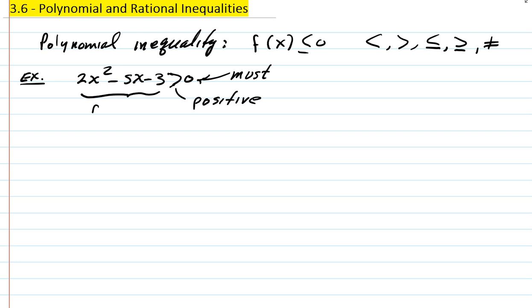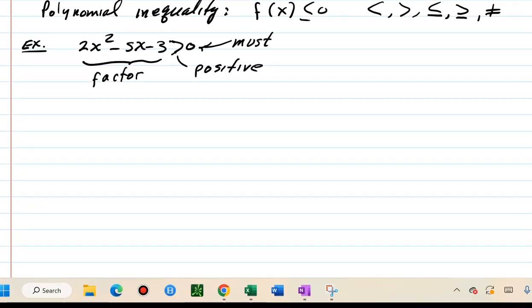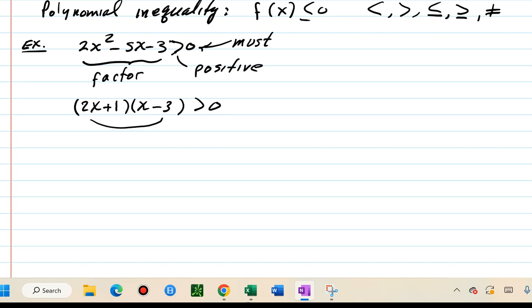The other important thing is that on the left side we have to have the factored form of the polynomial. That means we have to recall our factoring skills. The typical factoring for quadratic expressions is setting it up as a product of two binomial factors. I'm going to go with 2x for the first term and x for the second. Two numbers multiply to negative three, and the outer-inner combination has to give me negative five — so it turns out to be one and negative three.